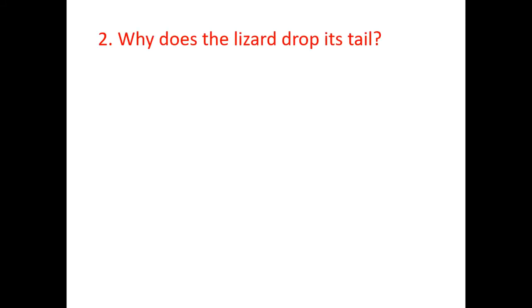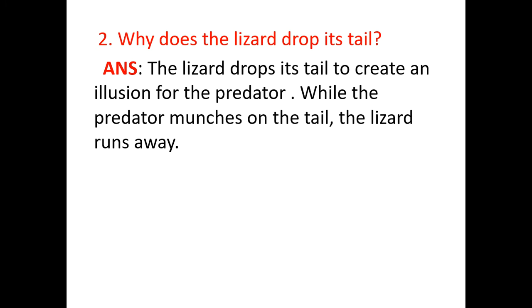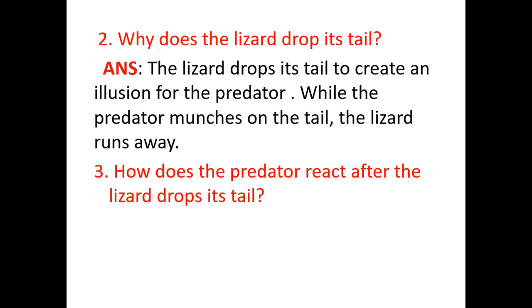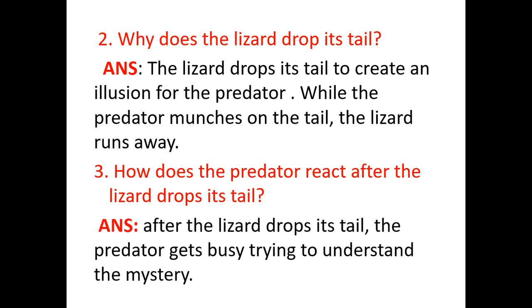Question two: why does the lizard drop its tail? The lizard drops its tail to create an illusion for the predator. While the predator munches on the tail, the lizard runs away. Question three: how does the predator react after the lizard drops its tail? After the lizard drops its tail, the predator gets busy trying to understand the mystery of how the gecko suddenly caught something and dropped its tail — it becomes a mystery to find out.